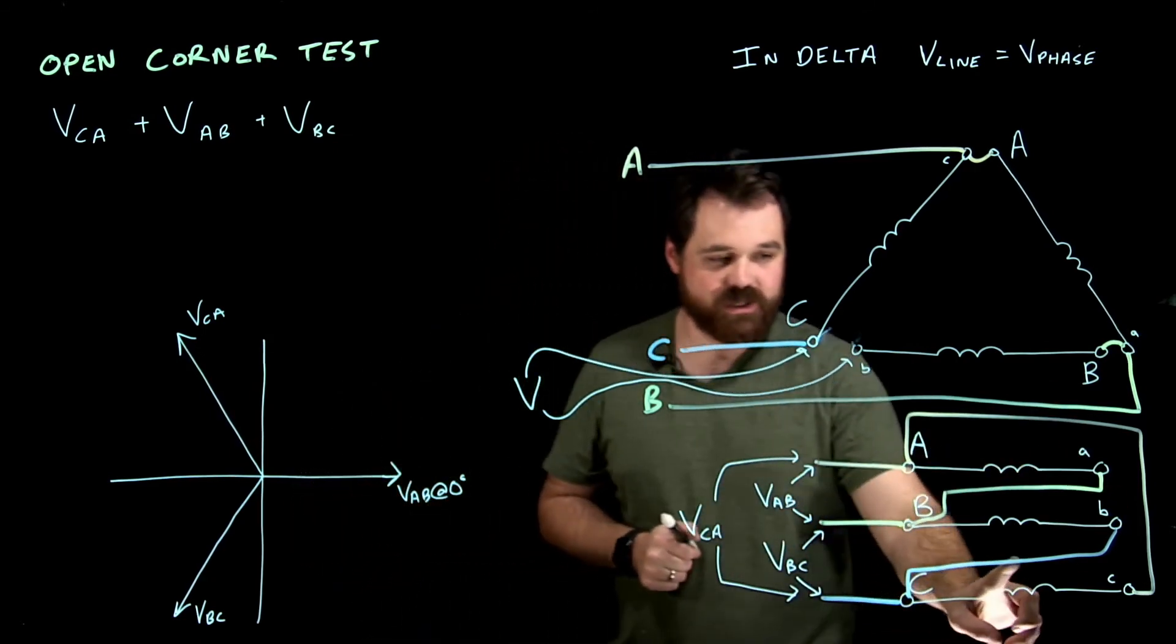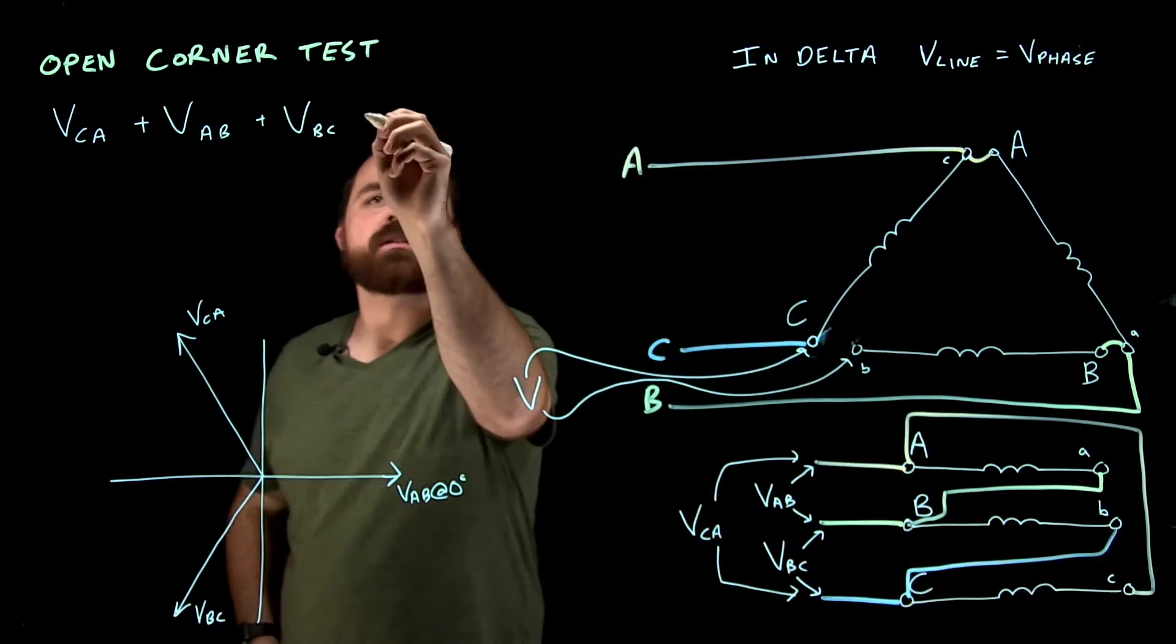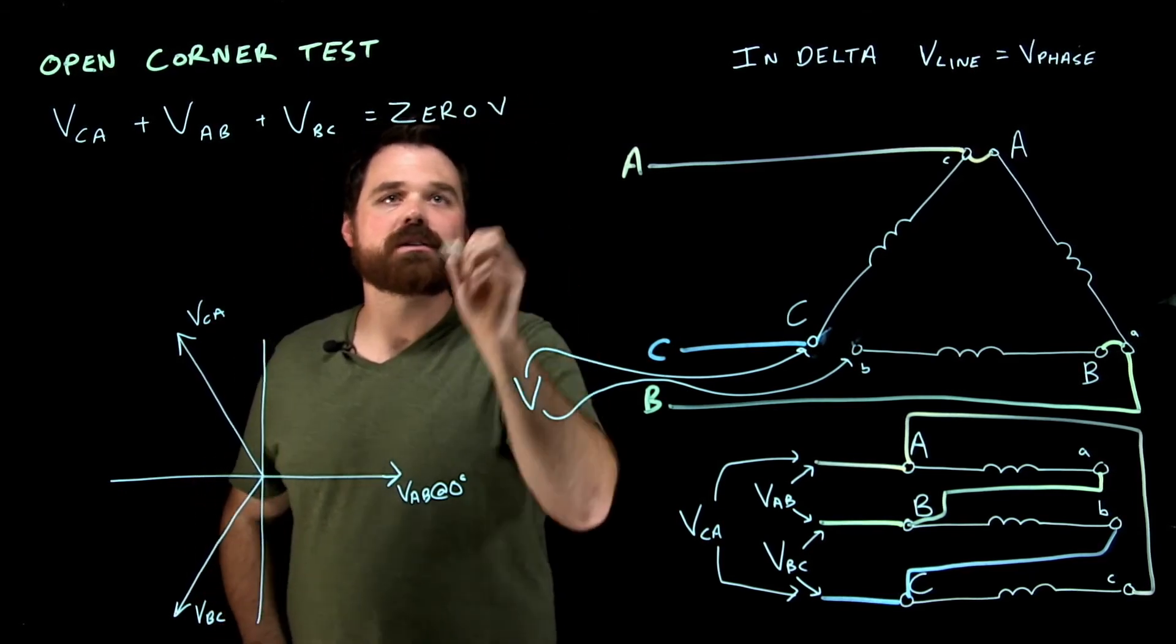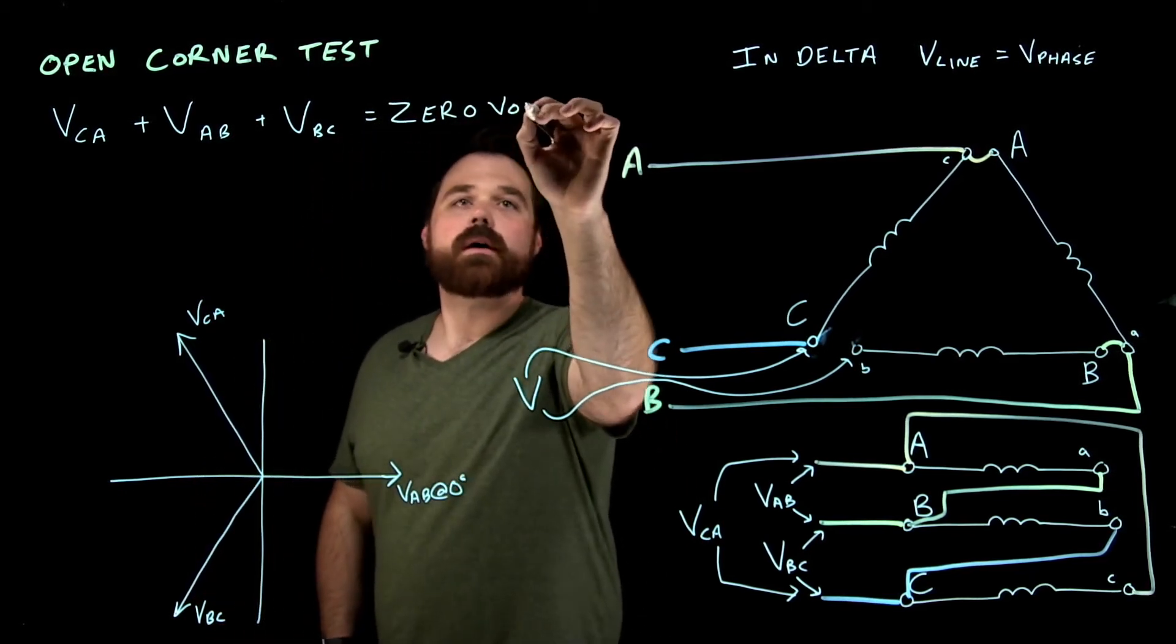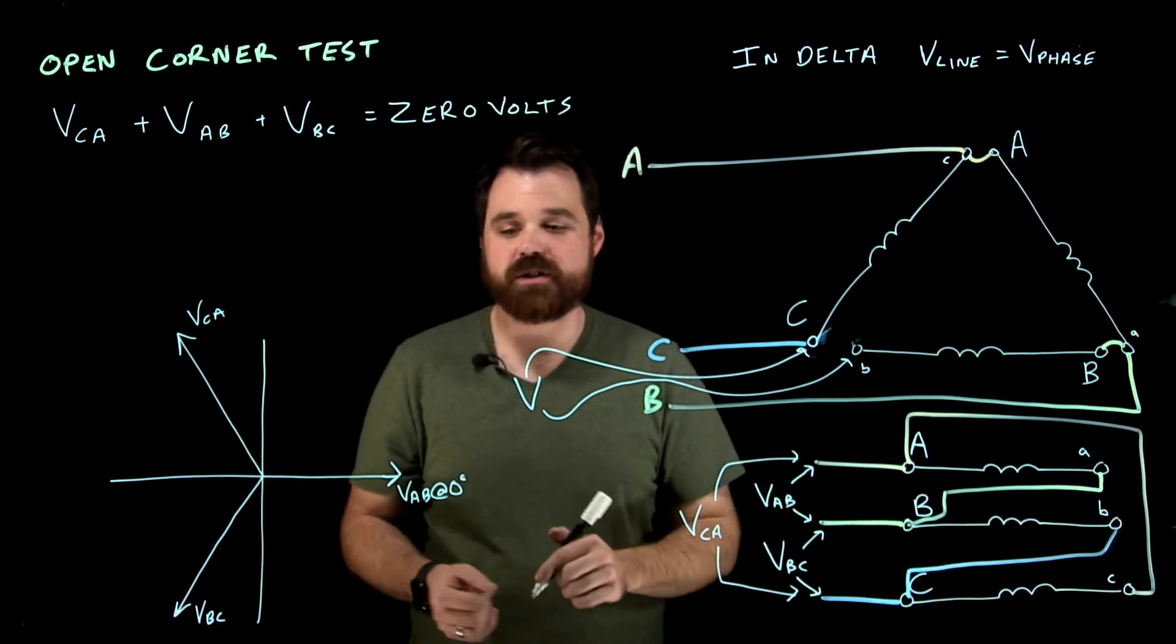Now, if you have those all configured correctly and connected correctly, before I make this connection down here, this blue line, you should equal zero volts. And that is because all of these are 120 degrees separated.